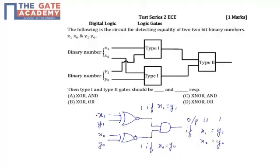So if we see for x1 y1 and x0 y0 as input, we use XNOR gate for which the output would be 1 if and only if x1 is equal to y1, and this output would be 1 if x0 is equal to y0.